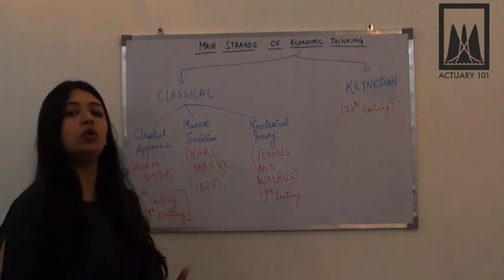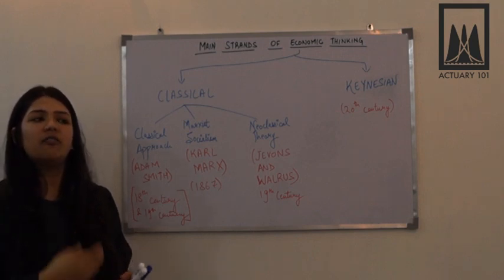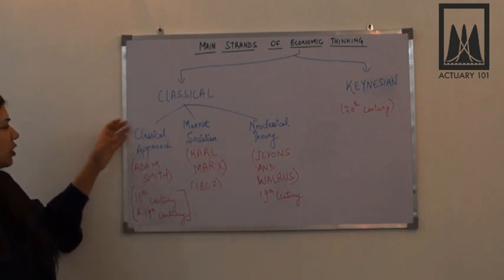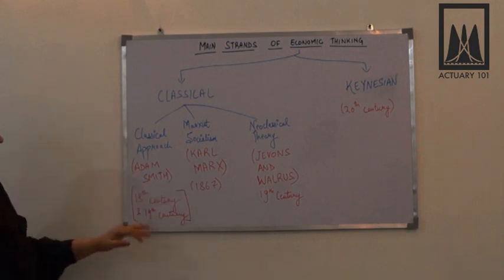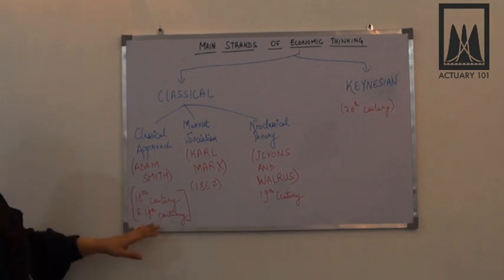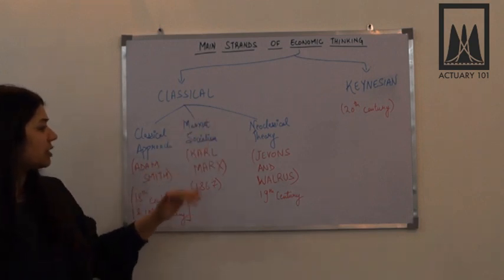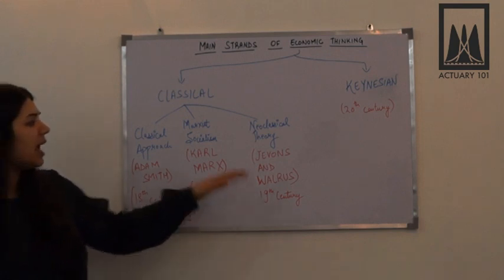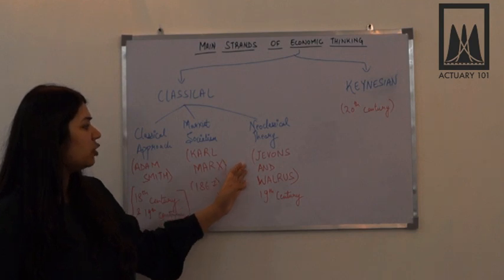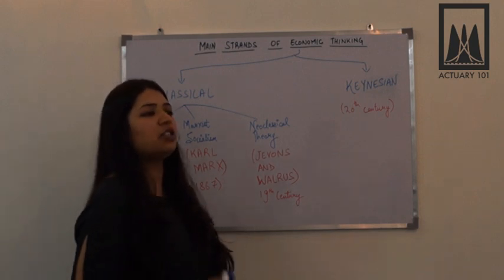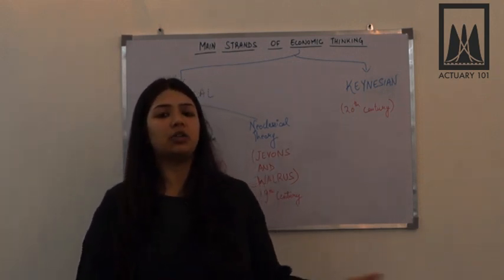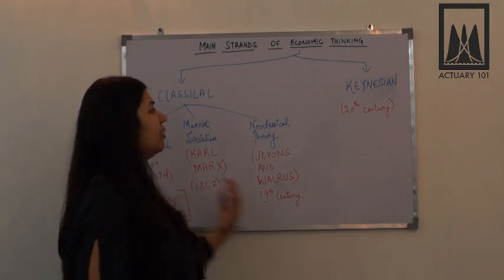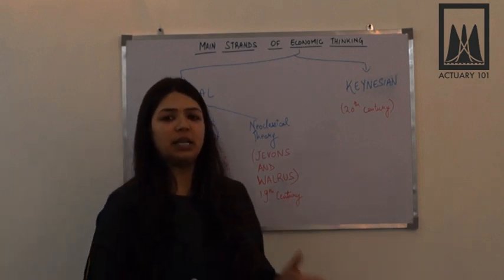Classical theory mainly deals with how to value a product — basically it helps in determining how the value of a product should be determined. There were three phases in the classical theory: the first being the classical approach, founded by Adam Smith, developed throughout the late 18th and early 19th century. Then came Marxist socialism, developed by Karl Marx in his book Capital in 1867. Further, we have the neoclassical theory, developed by Jevons and Walras in the late 19th century, which finally developed the equilibrium price and quantity traded that we study in microeconomics.